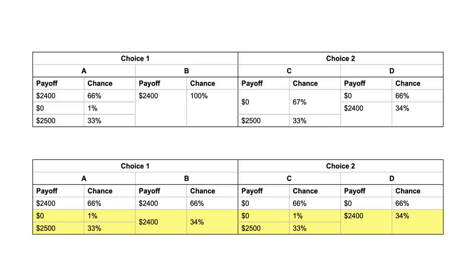With this split, you can see that the bets in the bottom two rows of choice 1 and choice 2 are the same. Both choice 1 and choice 2 involve a choice between, in one bet, a 1% chance of nothing and a 33% chance of $2,500, and in the other bet, a 34% chance of $2,400. That common bet is paired with a 66% chance of the same payoff regardless of the preferred bet — $2,400 in choice 1 and $0 in choice 2.